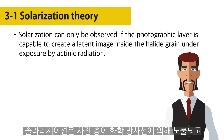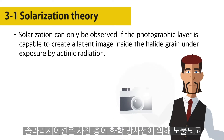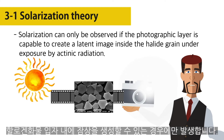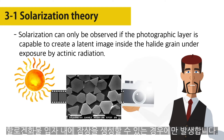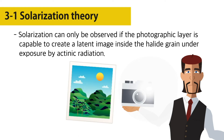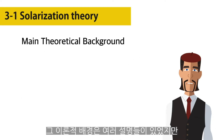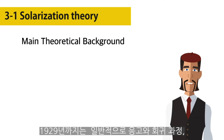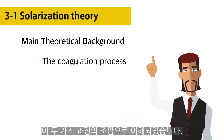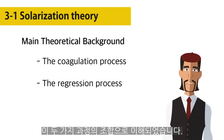It can be stated that solarization can only be observed if the photographic layer is capable of creating a latent image inside the halide grain under exposure by actinic radiation. Many explanations have been given, but until 1929 solarization was generally understood as a combination of two main processes: the coagulation process and the regression process.